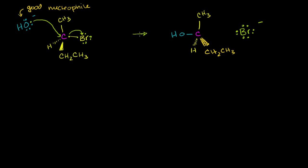Now we just described a classic SN2 reaction. I always like to emphasize the SN2 because my brain always confuses it with SN1. This is SN2 because it is substitution with a nucleophile — that's the hydroxide in this case — and the number 2 means the rate-determining step involves both of the reactants. And there is only one step in this reaction, which definitely involves both reactants. So this is a classic SN2.